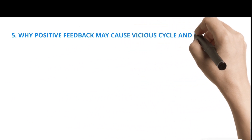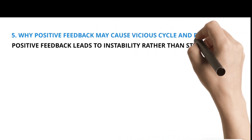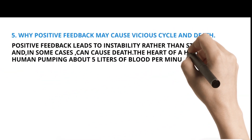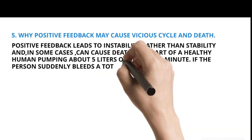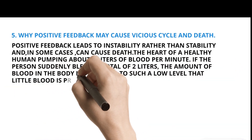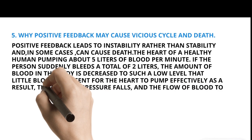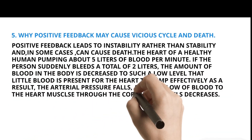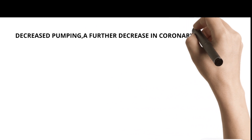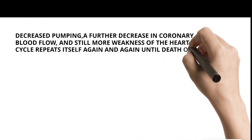Why Positive Feedback May Cause Vicious Cycle and Death: Positive feedback leads to instability rather than stability and, in some cases, can cause death. The heart of a healthy human pumps about five liters of blood per minute. If a person suddenly bleeds a total of two liters, the amount of blood decreases to such a low level that little blood is present for the heart to pump effectively. As a result, arterial pressure falls and the flow of blood to the heart muscles through the coronary vessels decreases. This results in weakening of the heart, further decreased pumping, a further decrease in coronary blood flow, and still more weakness of the heart. The cycle repeats itself again and again until death occurs.